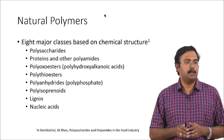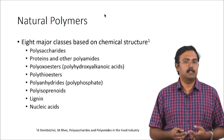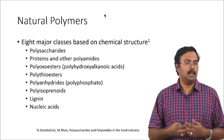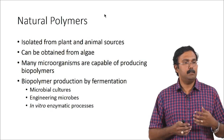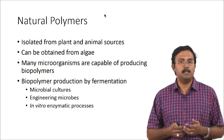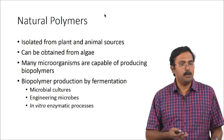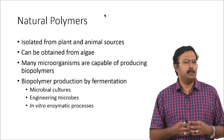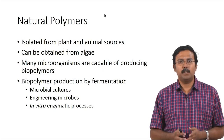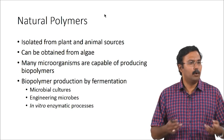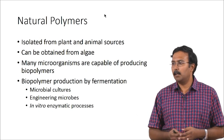We will talk about polysaccharides because we have not talked about them primarily when we talked about ECM, and we will also have a small introduction on what polyhydroxyalkanoic acids are. Natural polymers can be isolated from plant or animal sources, or from algae. Sometimes microorganisms capable of producing these polysaccharides can be cultured or used in fermentation processes. Biopolymer production by fermentation has actually been a growing field — people try to use microbial cultures to produce different types of polysaccharides.